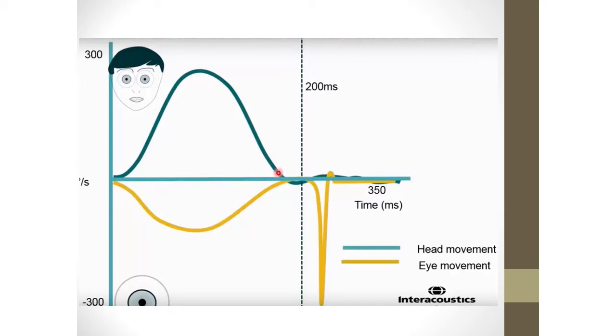However, when there is an impairment, you end up with a corrective saccade like this. This would be called an overt saccade. And it actually took place after the head or the particular head impulse had just ended. And doctors have been doing this.